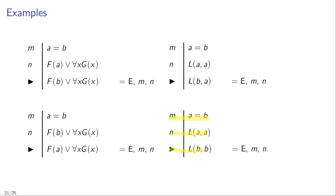The difference between the third and the fourth example is that in the third example we only replaced one of the occurrences of A with the name B, but in the fourth example we replaced both occurrences of the name A with the name B. Both are correct applications of the rule identity elimination.